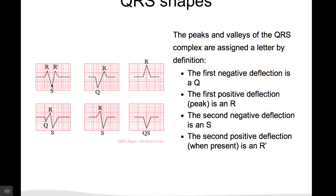The first negative deflection after the first R wave is an S wave. And if you have a secondary R wave, it's called R prime.